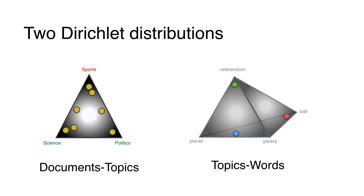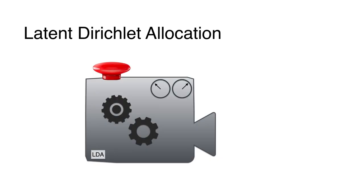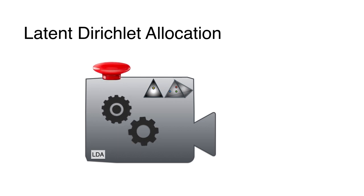To summarize, we have two Dirichlet distributions. The one on the left associates documents with their corresponding topics, and the one on the right associates topics with their corresponding words. Now let me show you how to put these together. LDA is a machine that produces documents, and its settings are precisely these two Dirichlet distributions. We adjust the settings by moving points inside the distributions, then press the button to activate the gears that produce a document.